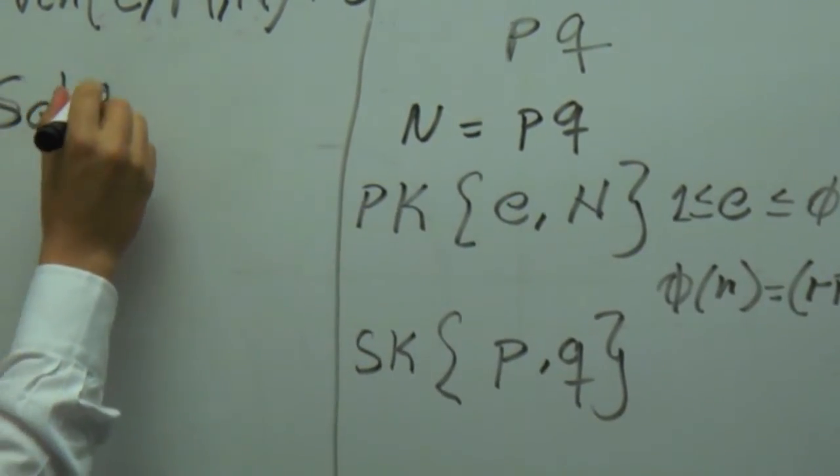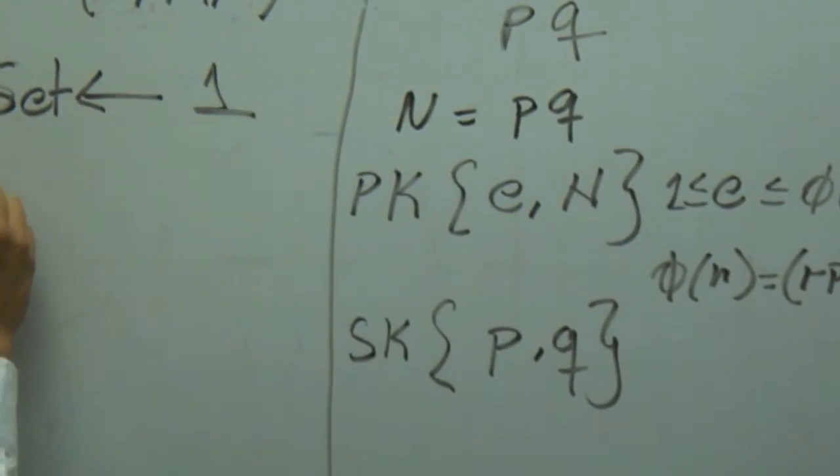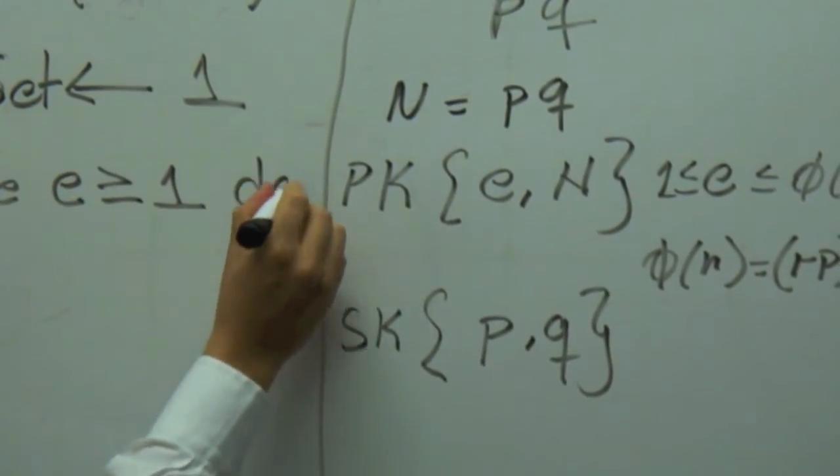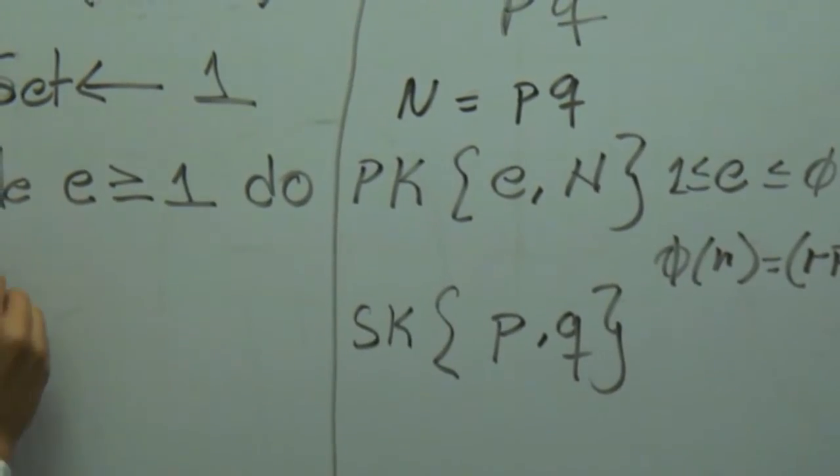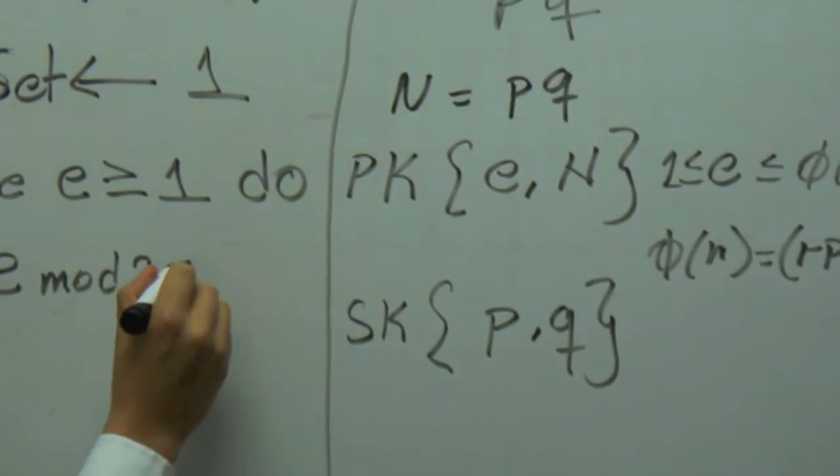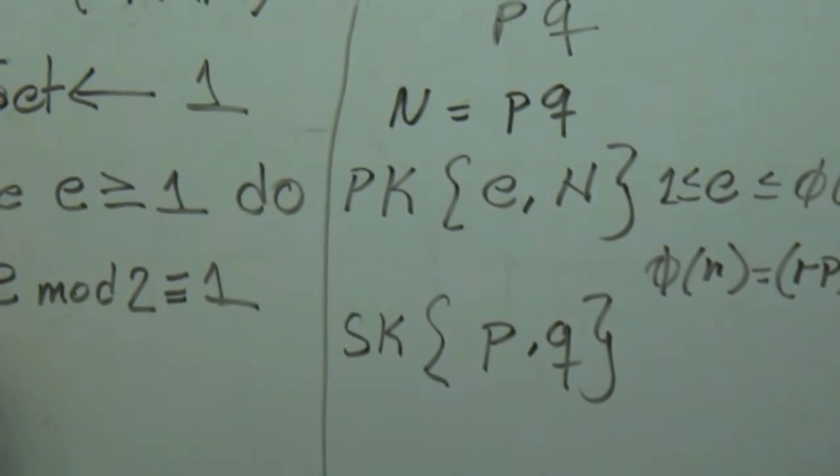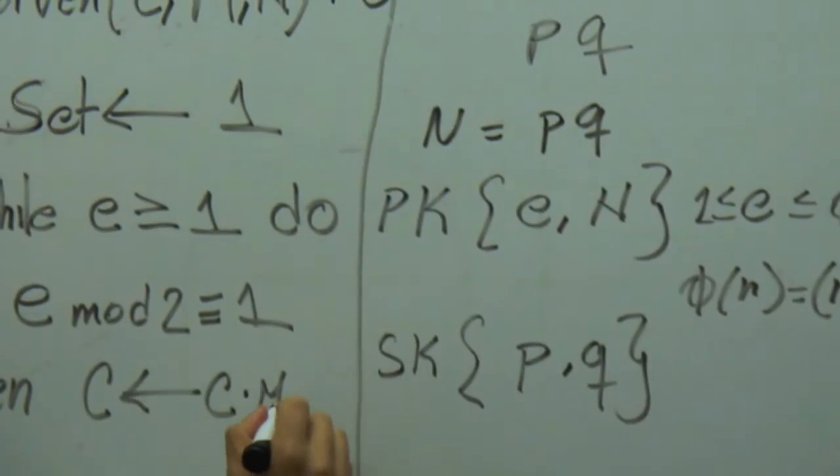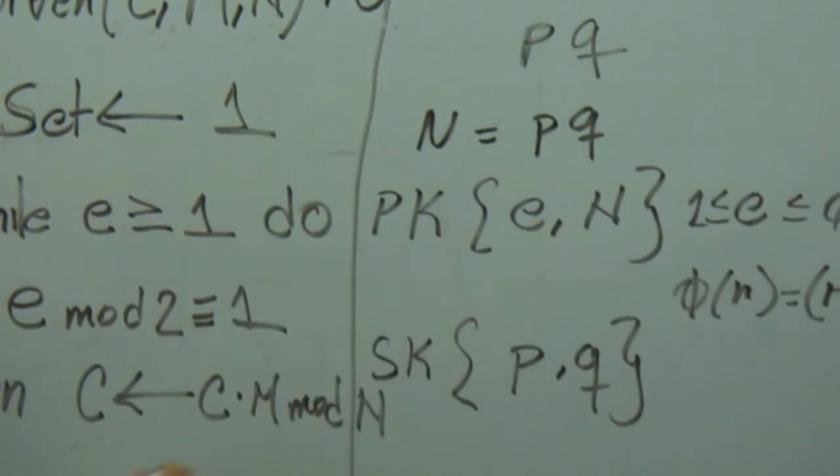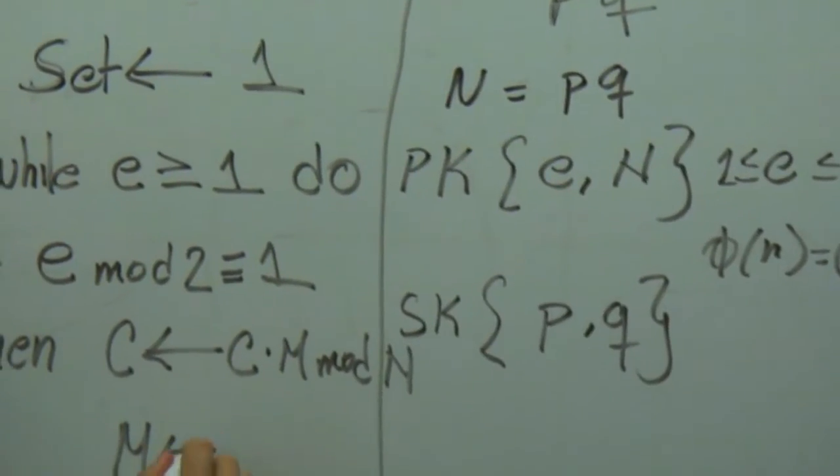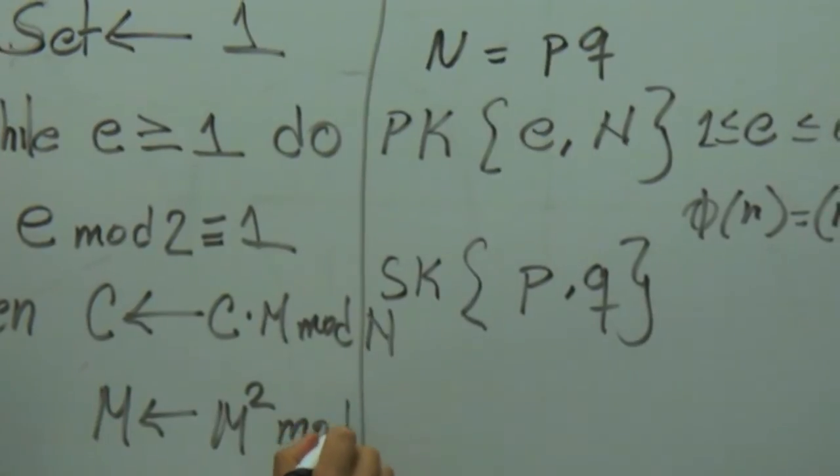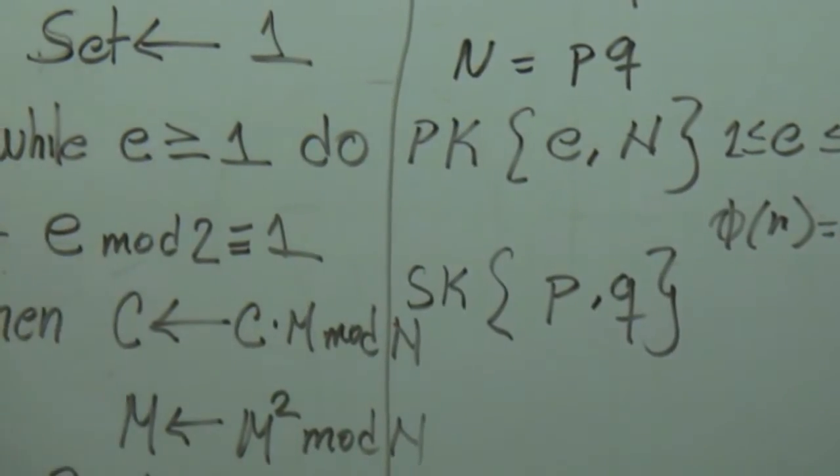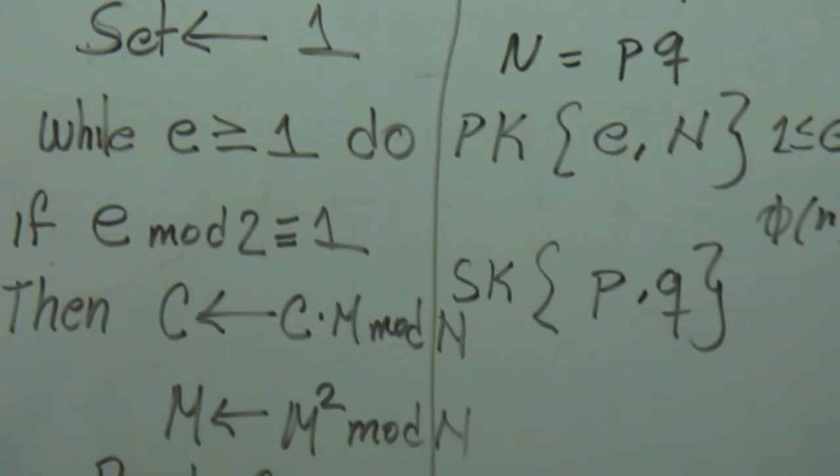So we set, first of all, we set a value to 1, while e is bigger or equal to 1, we execute. And if e, modular 2, is equivalent to 1, then c is produced by c times n, mod n, which means m, the message is m squared of mod n. And this means that we can print c, the cipher. That's the algorithm. It's very simple, and it means very straightforward.